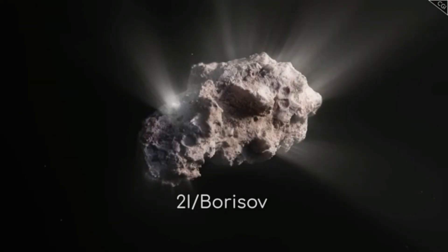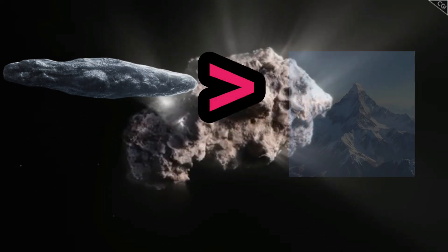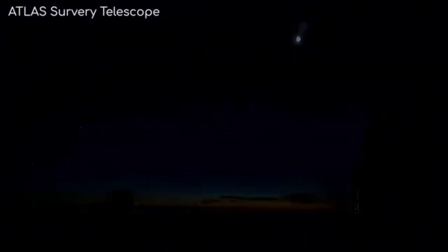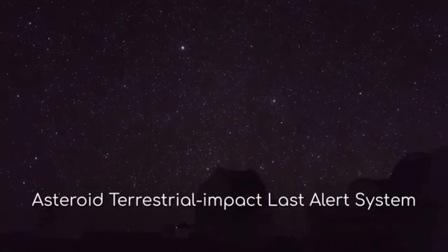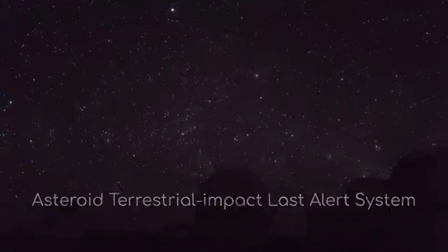But Atlas dwarfs them both. Seven miles wide. That's bigger than Mount Everest. For context, Borisov was 0.6 miles across. Oumuamua? Just 0.2 miles. So what's this interstellar titan doing in our neighborhood? That's where things get weird.